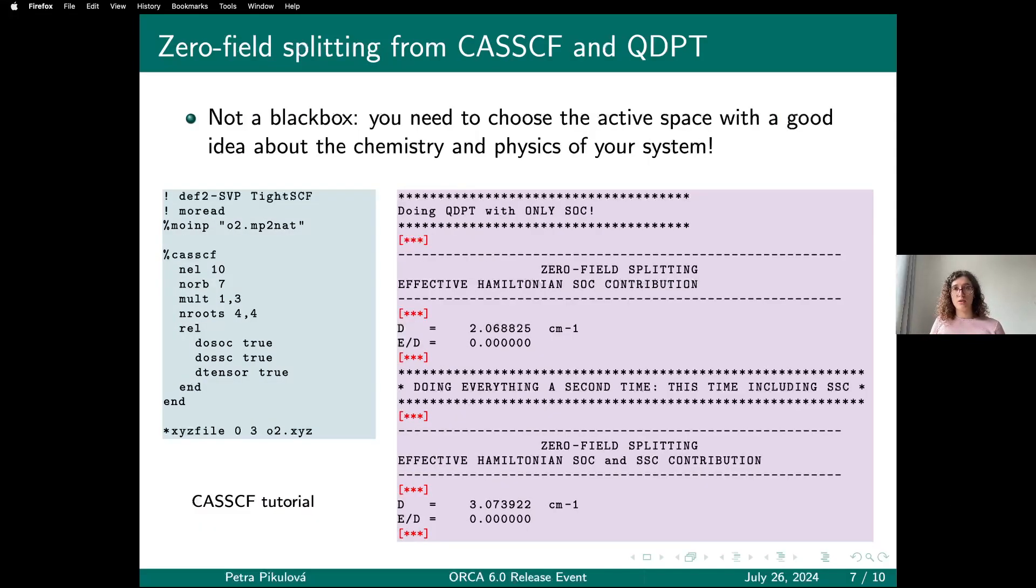If you want to do such a calculation using QDPT, I have an example for the same system. I have to start with a note of warning because CASSCF calculations require quite a lot more setup from you than DFT calculations with response theory. There is a lot of advice on setting up CASSCF calculations in this CASSCF tutorial that I really recommend you check out. You can find it in the download section of the ORCA forum. The things you need to pick are firstly the active space that needs to represent your system well—here I started with the MP2 natural orbitals.